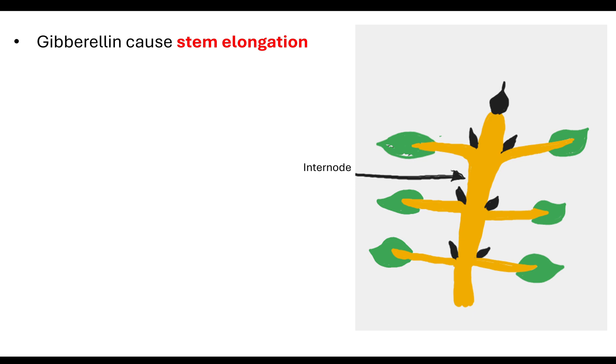Now I want to bring in gibberellins. Gibberellins are another hormone produced by the plant. Gibberellins cause stem elongation. They affect the length of the internodes. The internode is the region between the leaves of the stem. These internodes are being affected by gibberellin concentration.